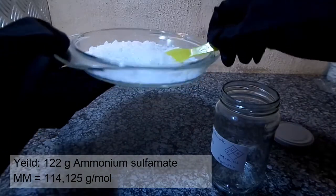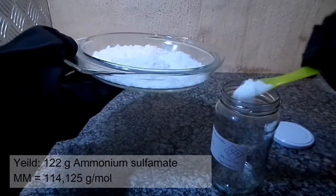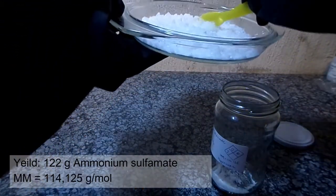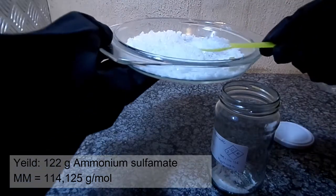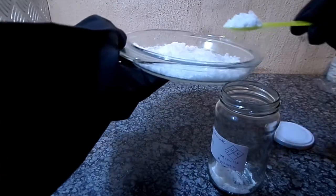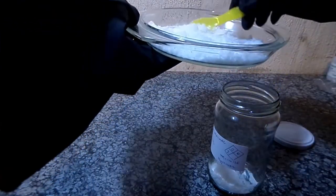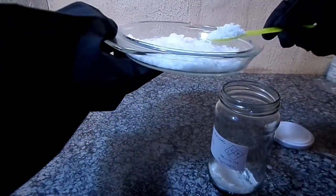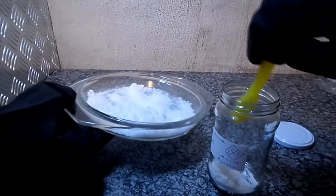In the end I obtained 105 grams of ammonium sulfamate product. This is somewhat low considering I started with 120 grams of sulfamic acid, however I suspect the sulfamic acid contains some water. I'll be using ammonium sulfamate in the preparation of nitriles in a future video. Stay tuned and thanks for watching.